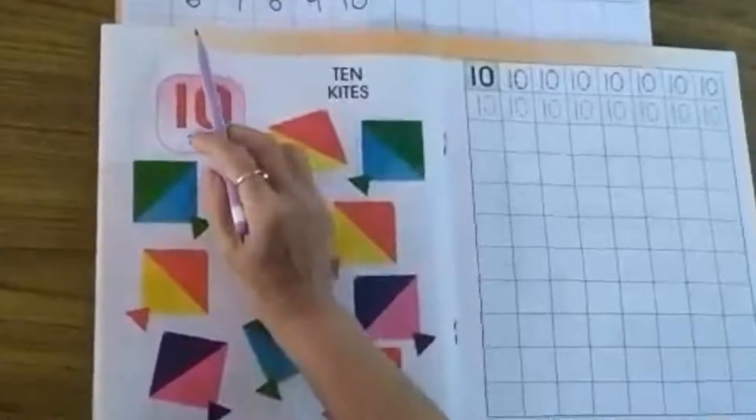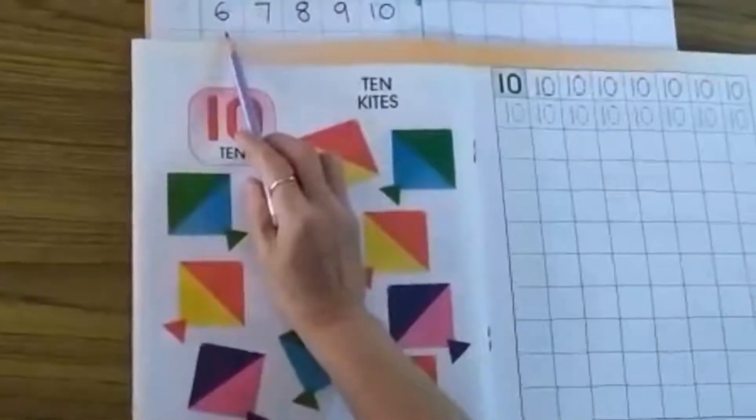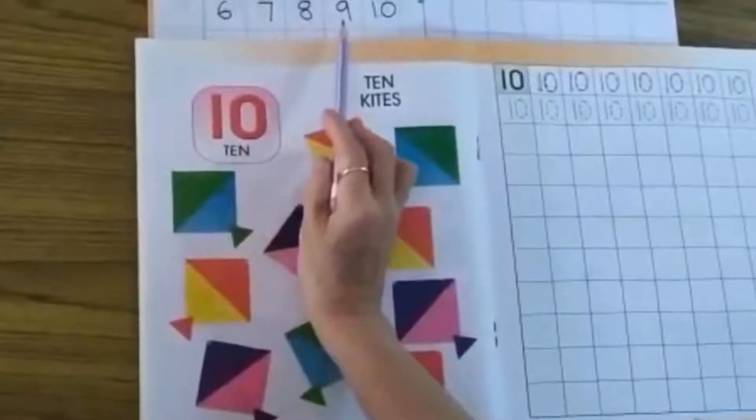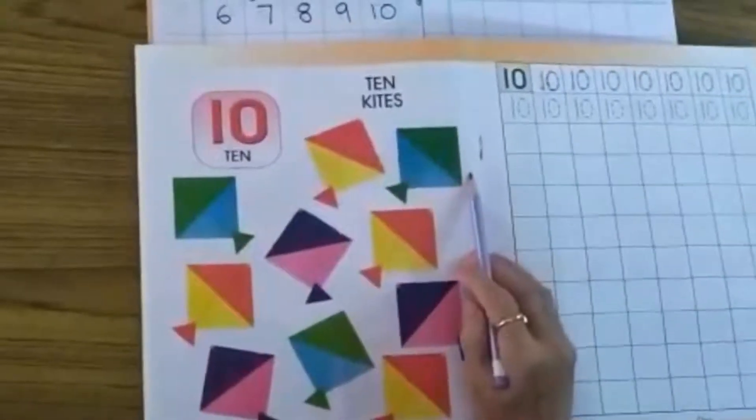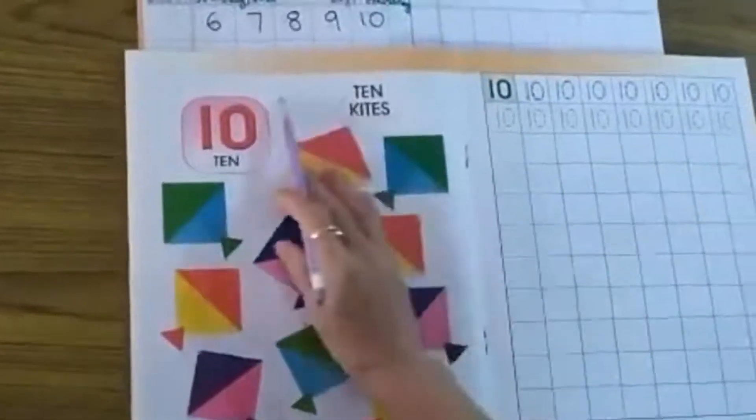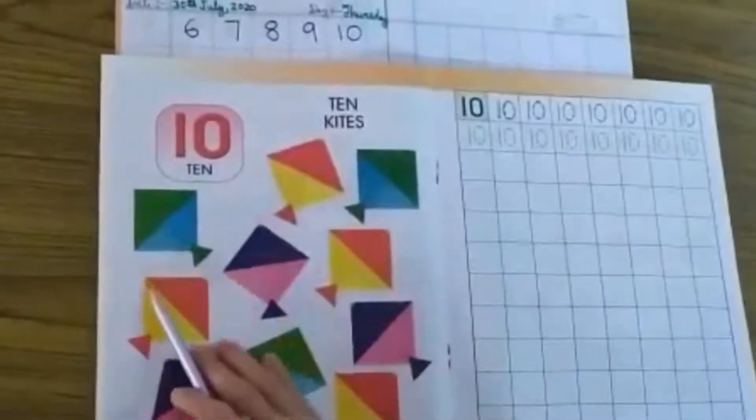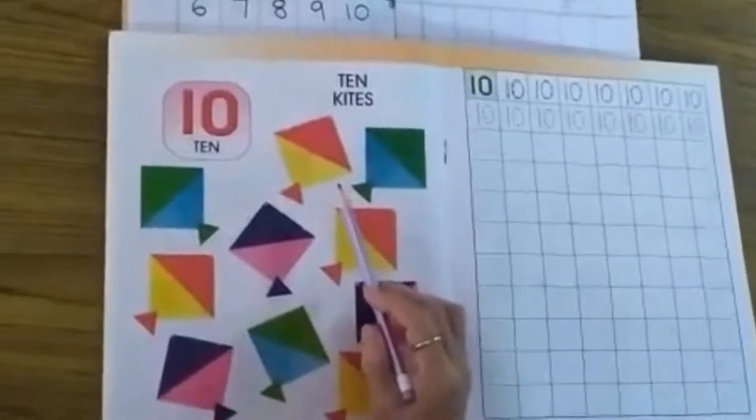In last week I taught you the numbers 6, 7, 8, 9. Now today I am going to teach you how to write number 10. In this picture so many kites are here. First you count how many kites are here.